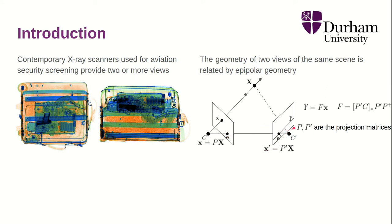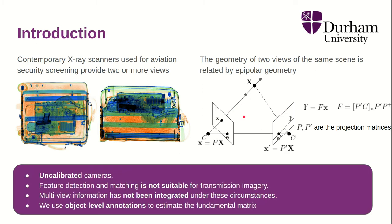If we don't have calibration information, we can still estimate F using point matching between views. This is our case — we have uncalibrated cameras where we don't know these parameters, so we need to estimate F. However, feature detection and matching in transmission imagery such as x-ray is not suitable. Under these circumstances, multi-view integration has not been done before, as far as we know. To solve this, we propose using object annotations to estimate the fundamental matrix F.